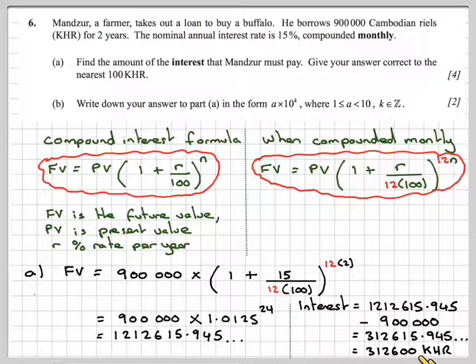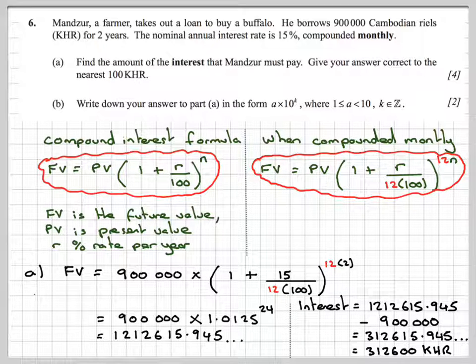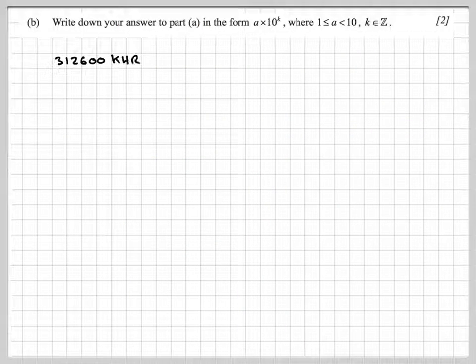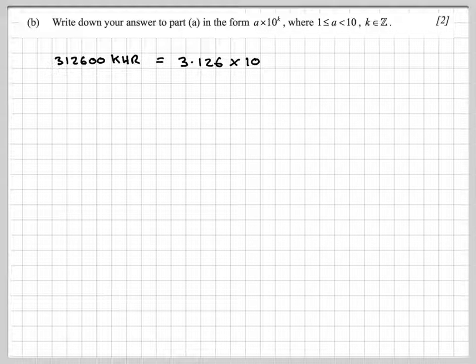Now we need to convert this to standard form for part B. In standard form, 312,600 becomes 3.126 × 10 to some power.